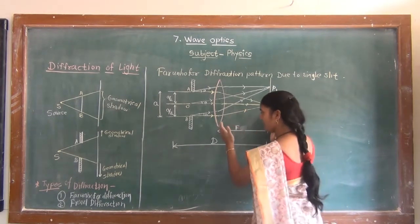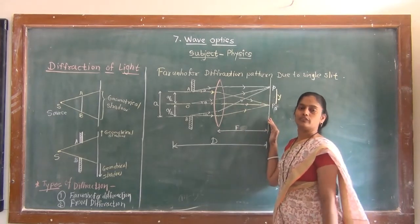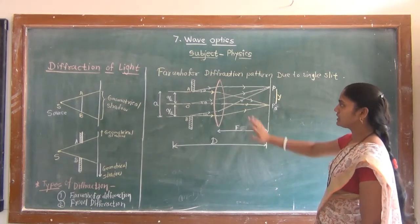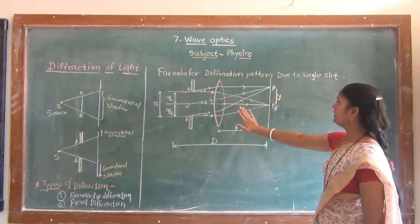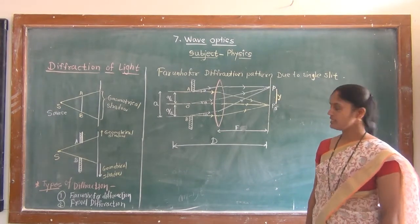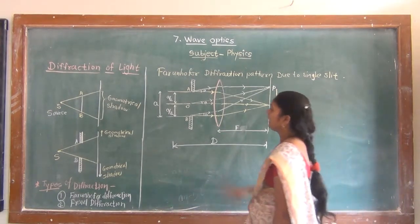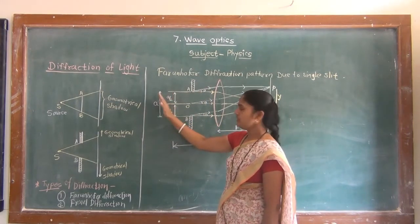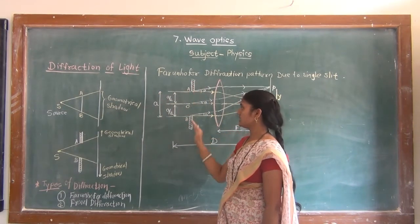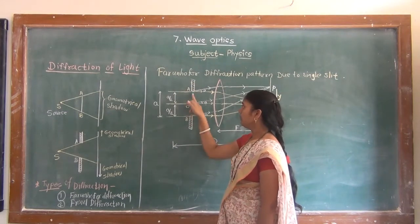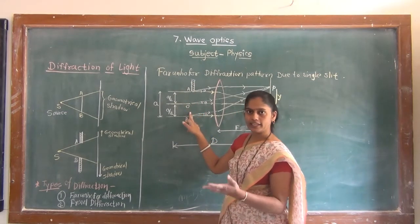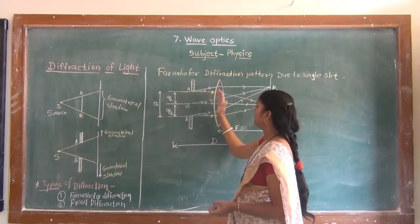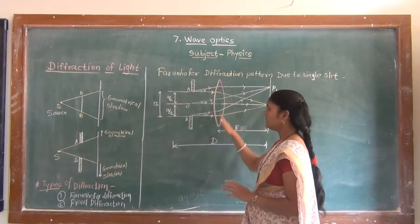The screen is placed at the focal point of the biconvex lens. Now, an important point we will discuss is the spread of the diffraction pattern due to a single slit. Here, AB is the slit, and plane wavefronts are incident on this slit. Many number of points act as secondary sources of light, and this light is then incident on the biconvex lens.